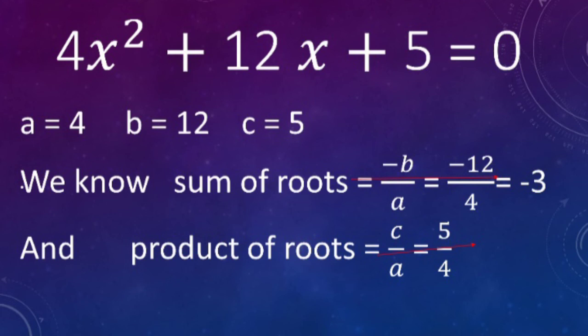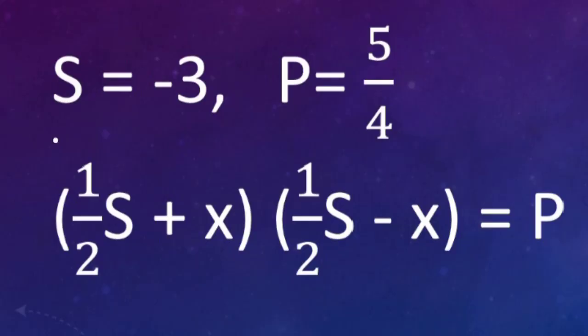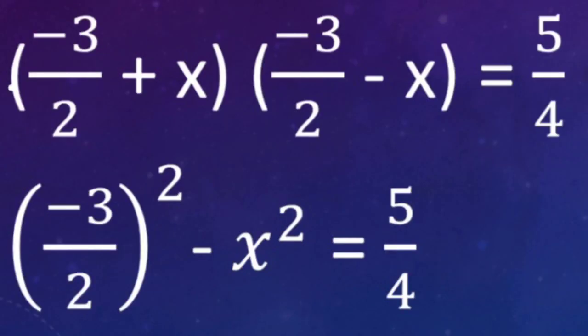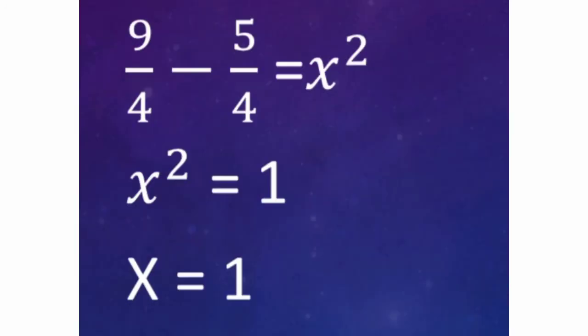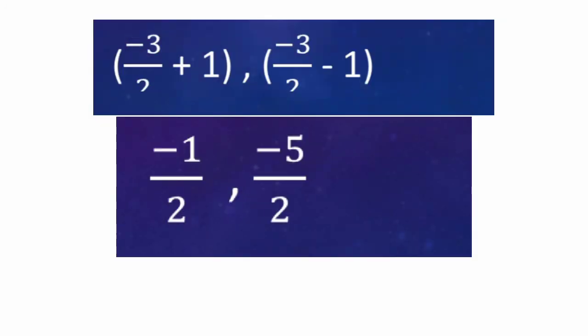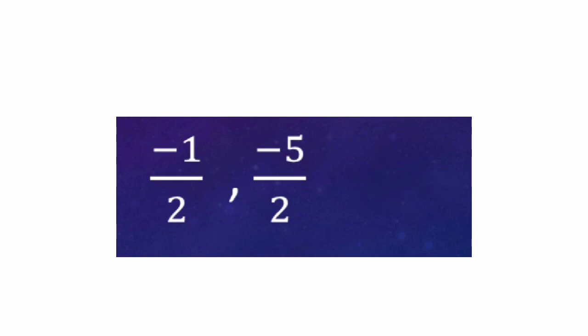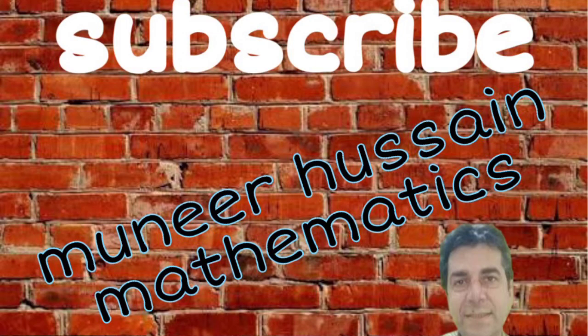We use the formula: (half of sum + x)(half of sum − x) = product. Substituting, we get 9/4 − x² = 5/4, so x² = 1 and x = 1. Placing x back into the two pairs — (half of sum + x) and (half of sum − x) — we find the roots. This is another method without breaking the midterm. Hope you understood. See you in the next video — thank you.